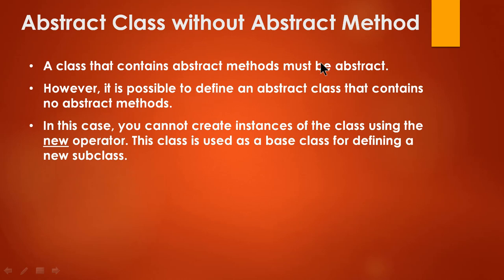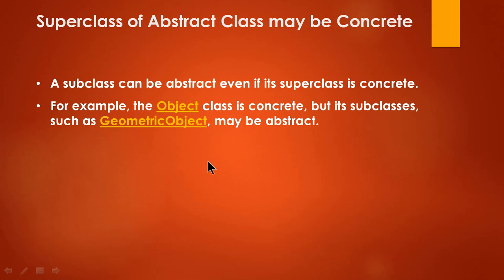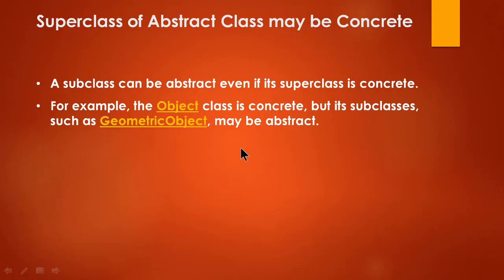An abstract class without abstract methods is also possible. A class that contains abstract methods must be abstract, but it is possible to define an abstract class that contains no abstract methods. Also, the superclass of an abstract class may be concrete — the subclass can be abstract even if the superclass is concrete. For example, the Object class is concrete, but its subclass GeometricObject may be abstract. So with this we stop here, and I hope you enjoy object-oriented programming and computing.